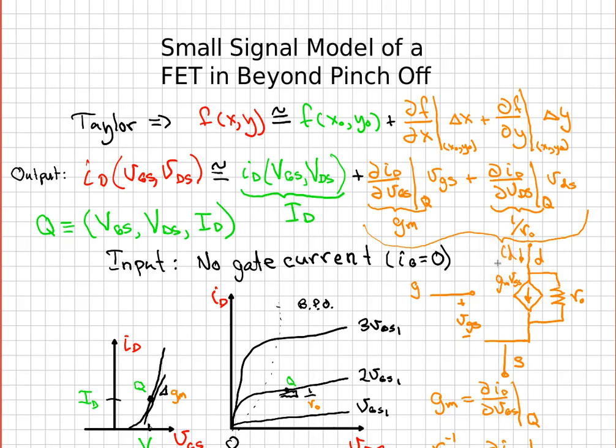On the input, it's very easy to make a model because there is no gate current. Little i sub capital G equals zero, so that means the gate just comes in and stops and there's no current flowing in there.